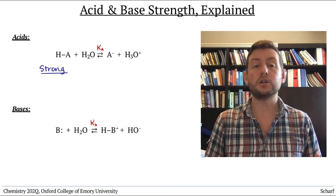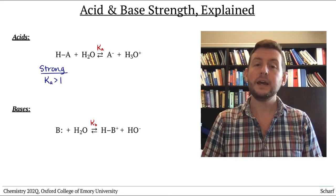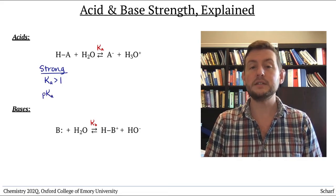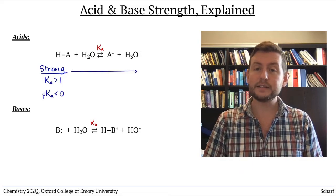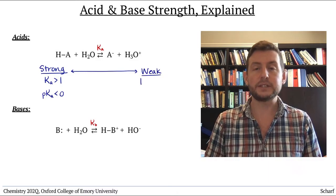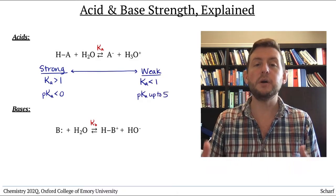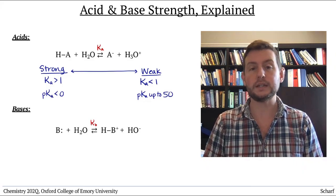Strong acids have a large kA greater than 1 and low pKa less than 0, while weak acids have a small kA less than 1 and a high pKa up to about 50 for the very weakest acids.